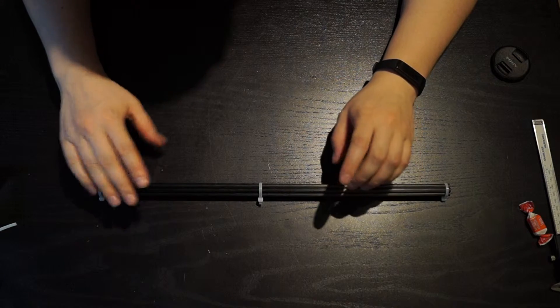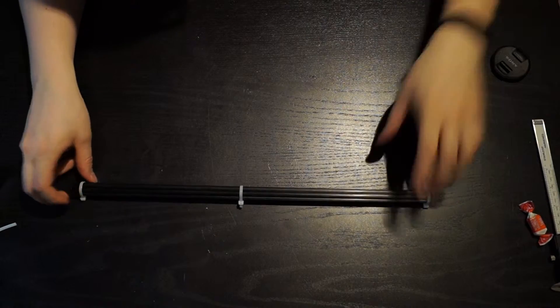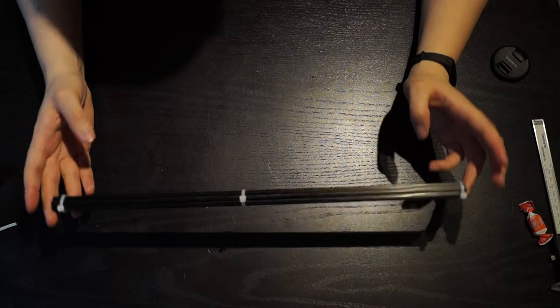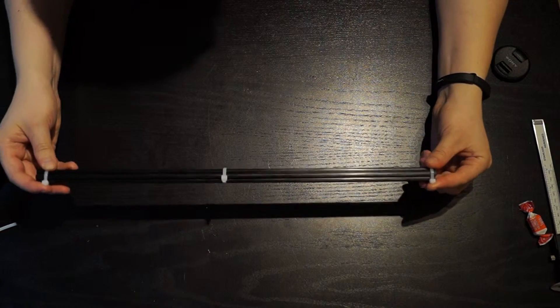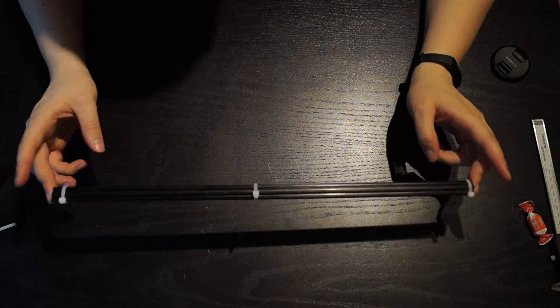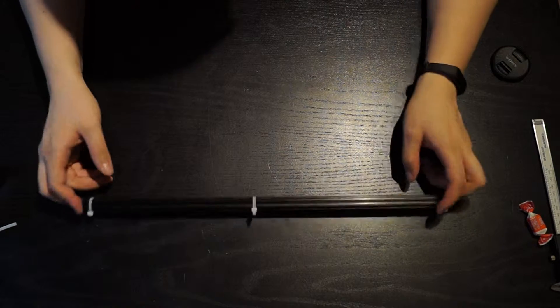So I got some 1 meter length carbon fiber rods, or tubes actually, from a local RC shop. Well, local - I just found them on the internet, but it's from Denmark, so everything in Denmark is local to Denmark. I got them from a Danish RC shop.